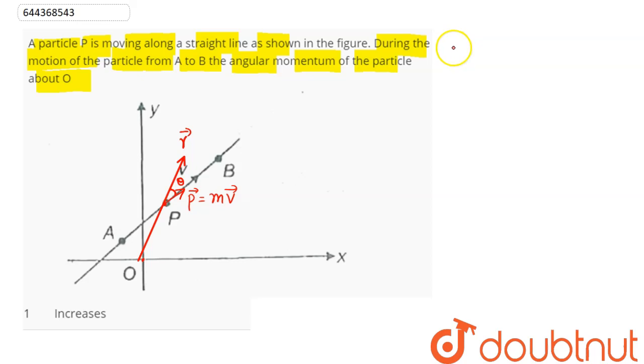Angular momentum about point O is given as R cross P. The magnitude of angular momentum comes out as R P sine theta.